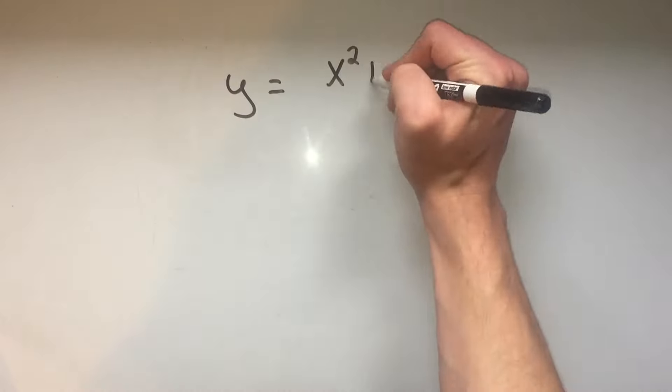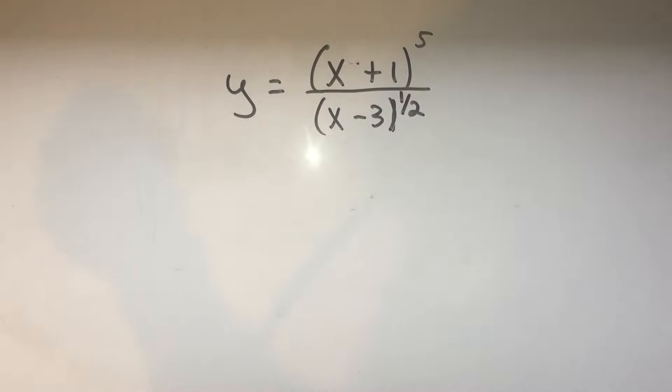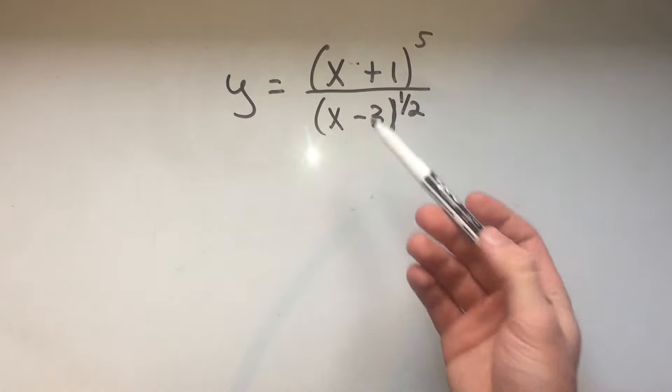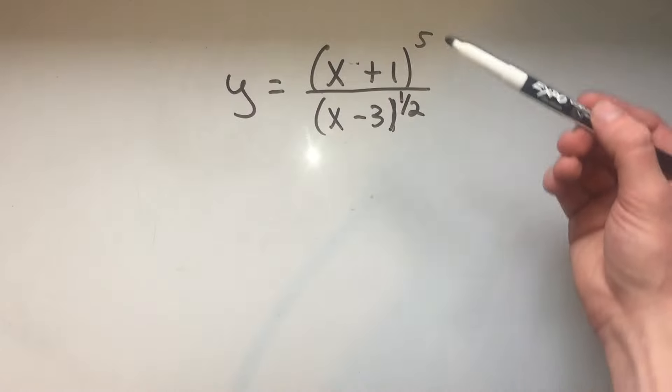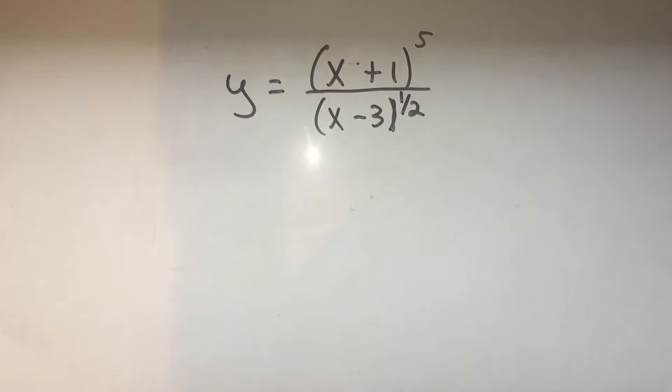My last trick is if you have a derivative that just looks awful, like look at this thing, this would be a terrible derivative to do normally. I've got like a quotient rule, and I'd have two chain rules inside. It's really awful.